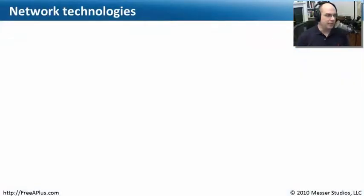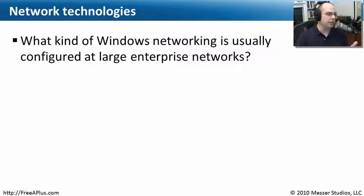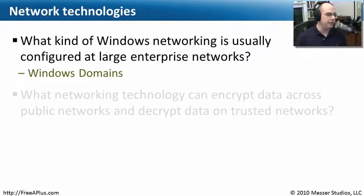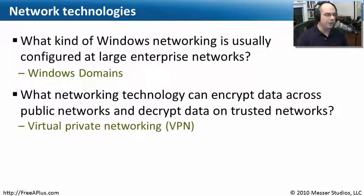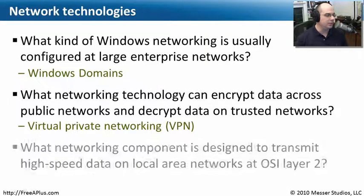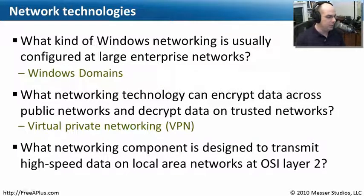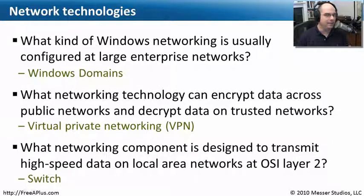Let's see what we can remember of these network technologies. Our first question: what kind of Windows networking is usually configured at large enterprise networks? There was a workgroup and also a Windows domain. Our second question: what networking technology can encrypt data across public networks and decrypt it once it gets to our inside trusted network? That was a virtual private network — a VPN — which encrypts data and on the inside has it in the clear so we can talk to local devices. And our last question: what networking component is designed to transmit high-speed data on local area networks at OSI Layer 2, that MAC address layer? That is a networking switch.